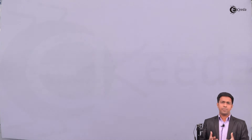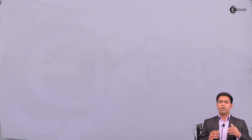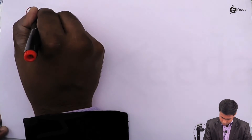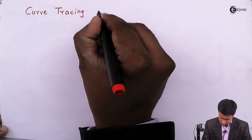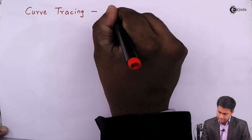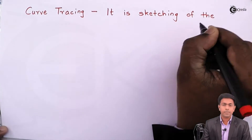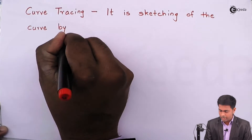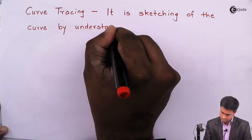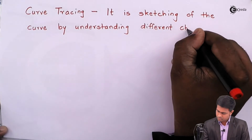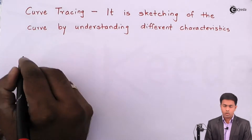There are three types of curves: Cartesian curves, parametric curves, and polar curves. We learn different characteristics for each. The definition of curve tracing is: it is the sketching of a curve by understanding the different characteristics of curves.